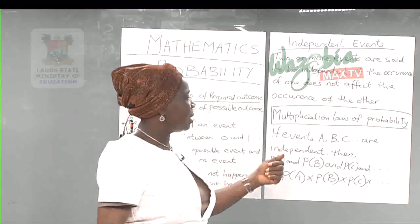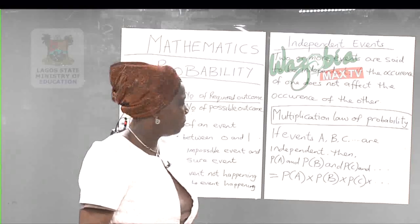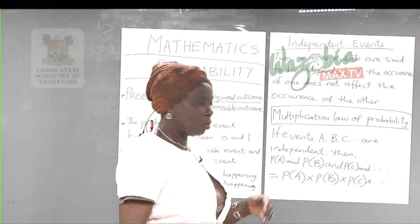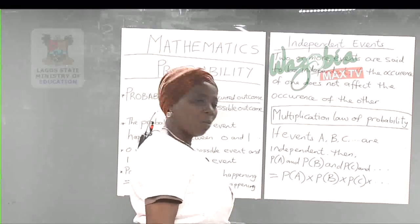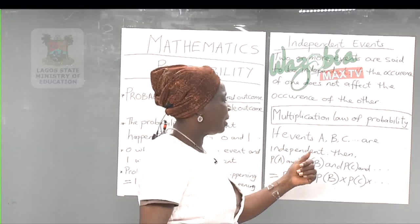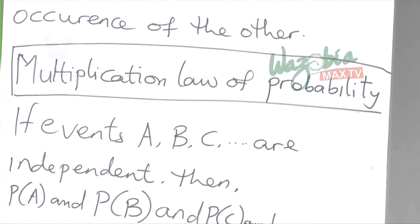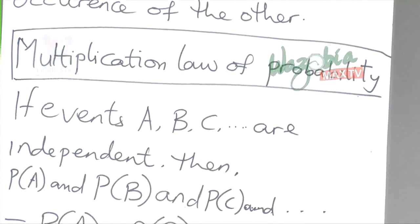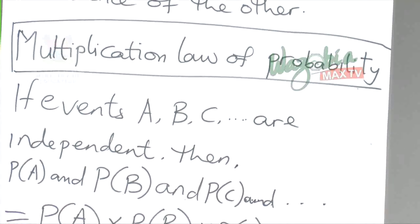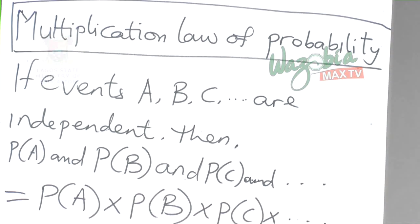Independent events lead us to the multiplication law of probability. If events A, B, and C are independent, then the probability of A and B and C equals the probability of A times the probability of B times the probability of C.